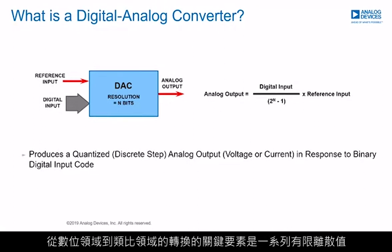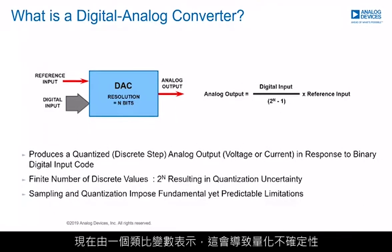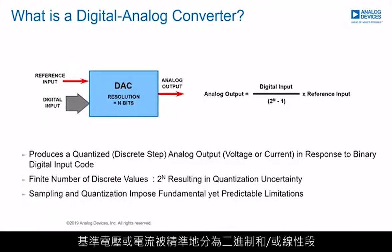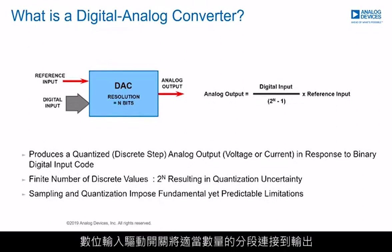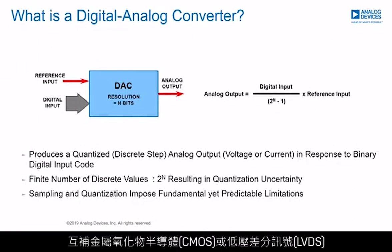A key element of the transformation from the digital domain to the analog domain is that a series of finite discrete values are now represented by an analog variable, which results in quantization uncertainty. A reference quantity — either voltage or current — is accurately divided into binary and/or linear segments, where the digital input drives switches that connect an appropriate number of segments to the output. The digital inputs may be supplied in different forms, such as transistor-transistor logic (TTL), complementary metal oxide semiconductor (CMOS), or low-voltage differential signaling (LVDS).